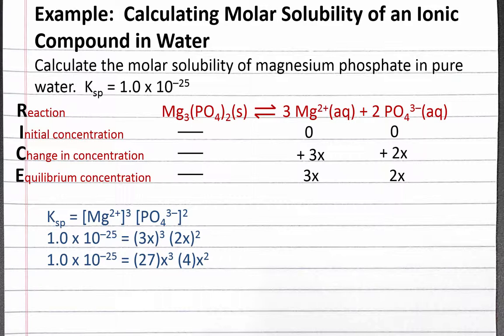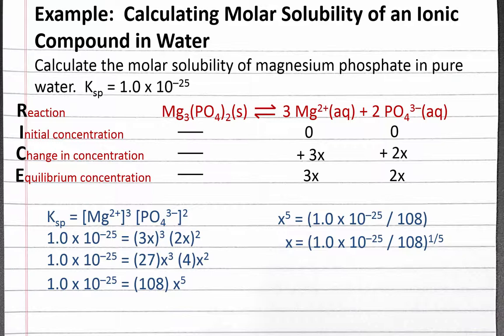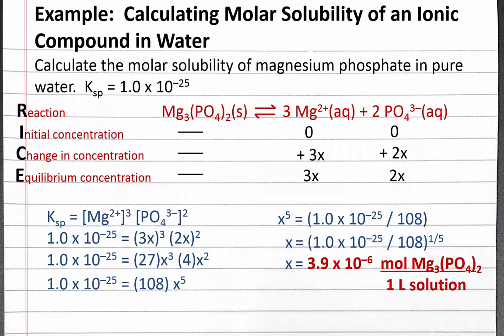We divide both sides by 108. And then, since x is raised to the fifth power, we take both sides to the one-fifth power. Completing the calculation, we should get a molar solubility of 3.9 times 10 to the negative 6th moles of magnesium phosphate per one liter of solution.